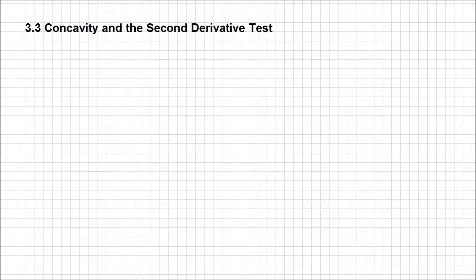In this lesson we're going to talk about concavity and the second derivative test. A second derivative is nothing else than the derivative of the first derivative of a function. We can even refer to it as the rate of change of the slope of that tangent.